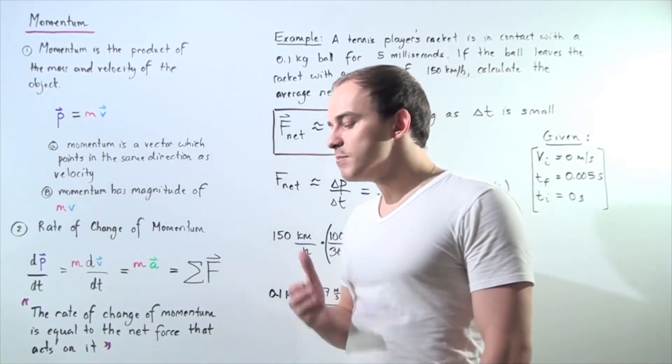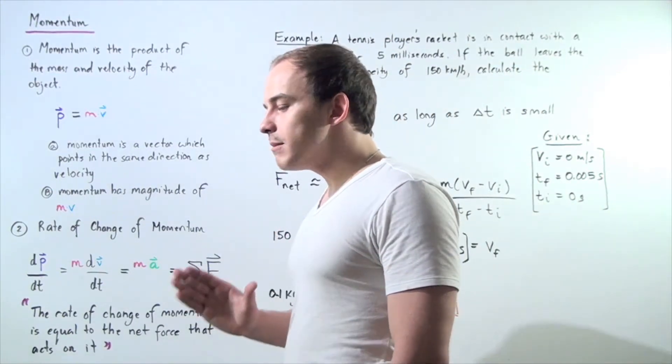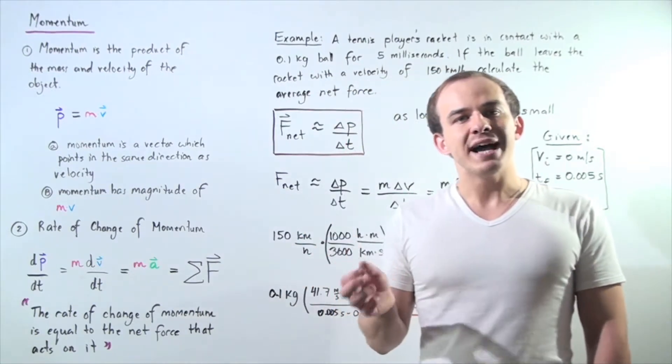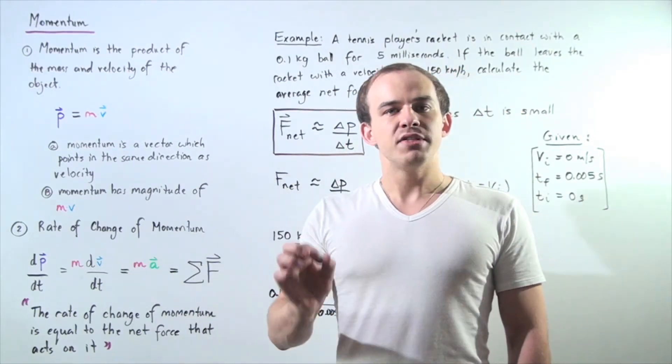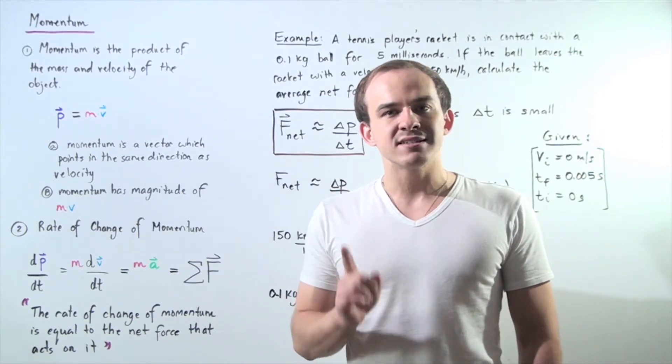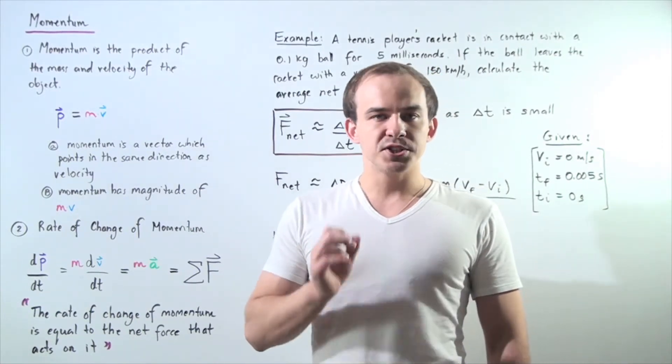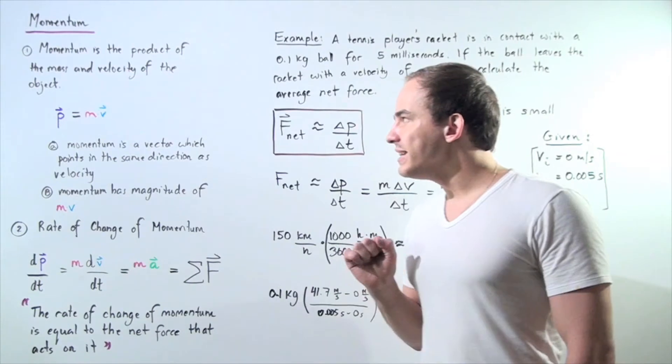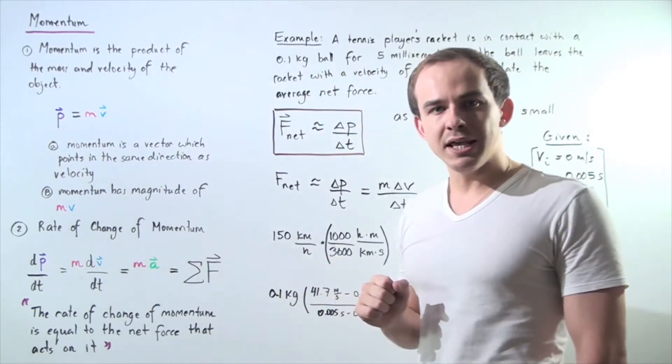So what exactly is momentum? Well, the momentum of an object is given by taking the mass of that object in kilograms and multiplying by the velocity of that object in meters per second.